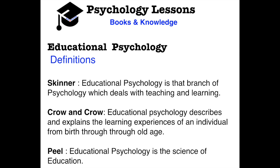Crow and Crow say that educational psychology describes and explains the learning processes of an individual from birth through old age. These two concentrate on the process of educational psychology right from birth to old age — the full lifespan of a person and what he gains during his life. Peel simply says that it is the science of education — how education is imparted.